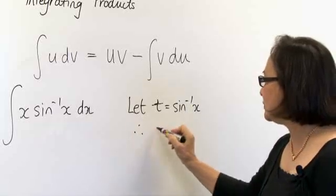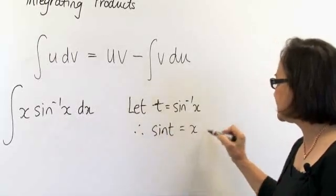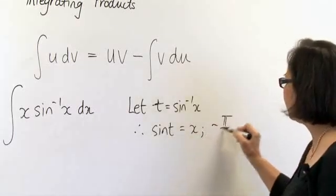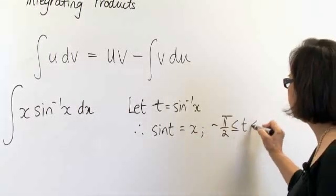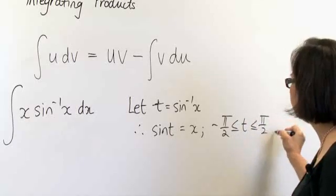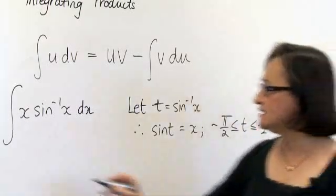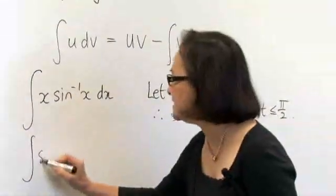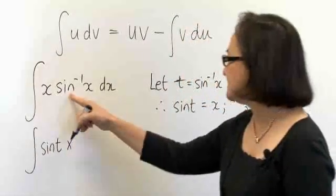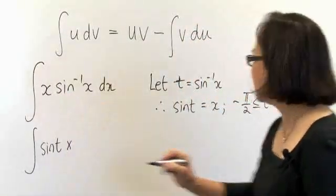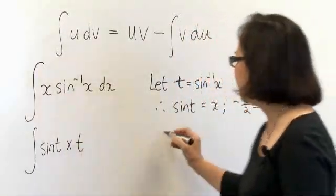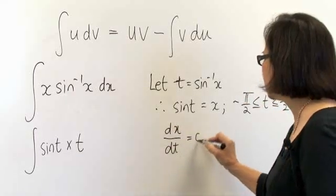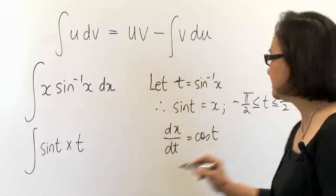Therefore we can say that sine t equals x, provided t lies between minus pi on 2 and pi on 2. Then this integrand becomes the integral of sine to the minus 1 of x becomes t, and our dx is cos t dt.